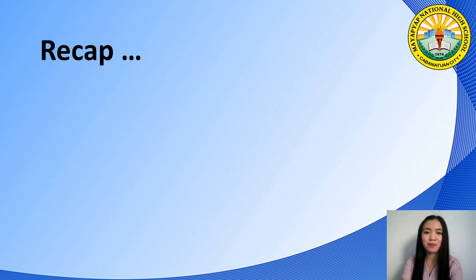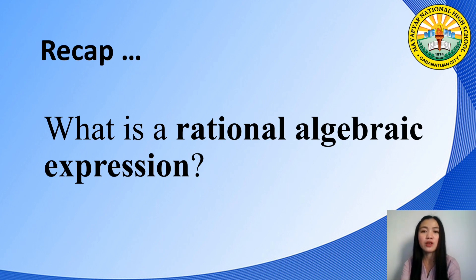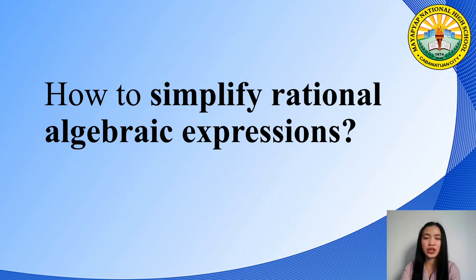Let's have a recap. A Rational Algebraic Expression is a ratio of two polynomials provided that the denominator is not equal to 0 — in symbols, P over Q, where P and Q are polynomials and Q is not equal to 0. To simplify: first, factor both the numerator and denominator, writing expressions in descending order of exponent and using various factoring techniques. Second, reduce the fraction by canceling out expressions in the numerator and denominator that are the same. Third, rewrite any remaining expressions in the numerator and denominator.